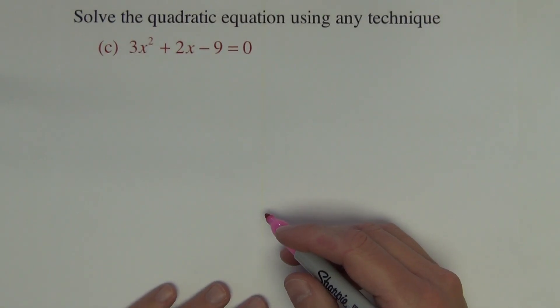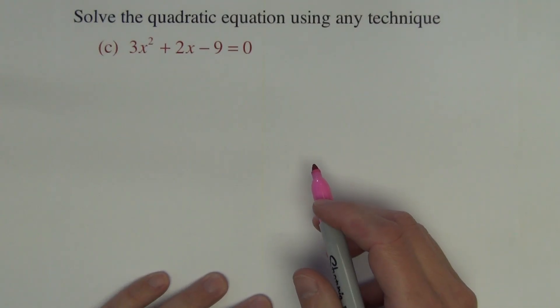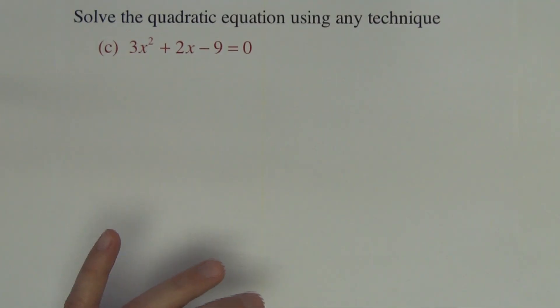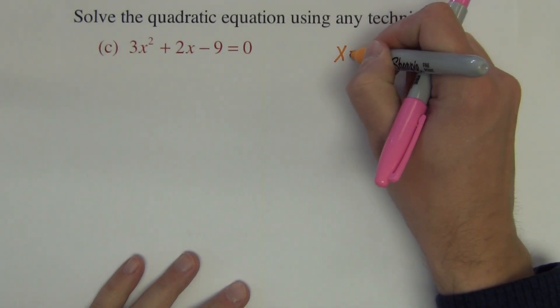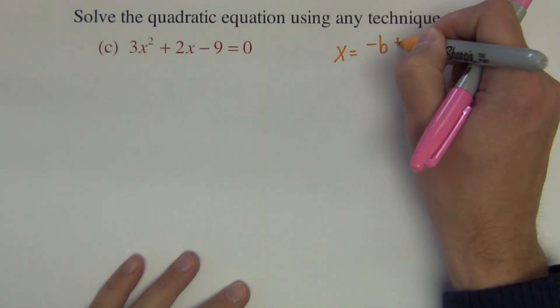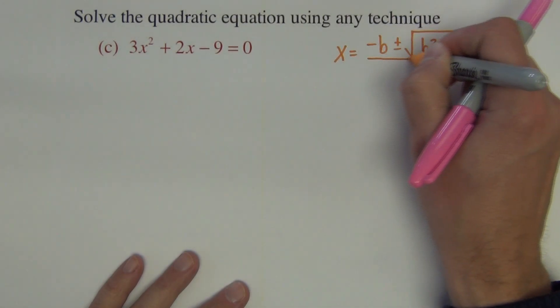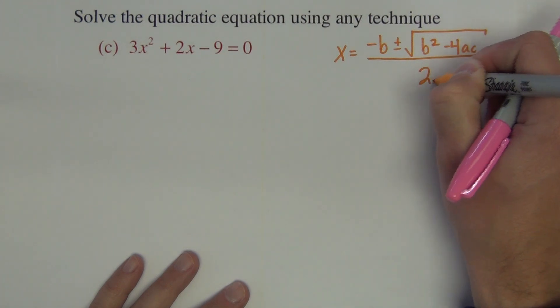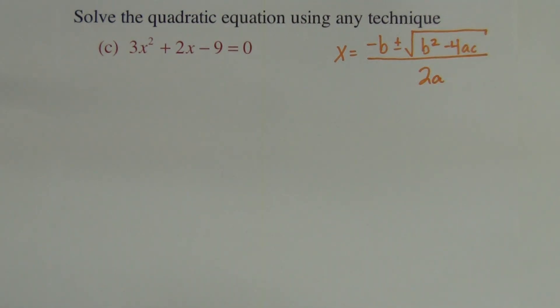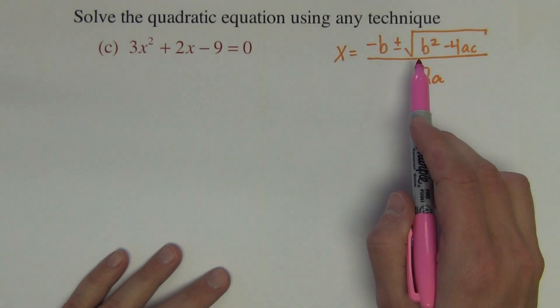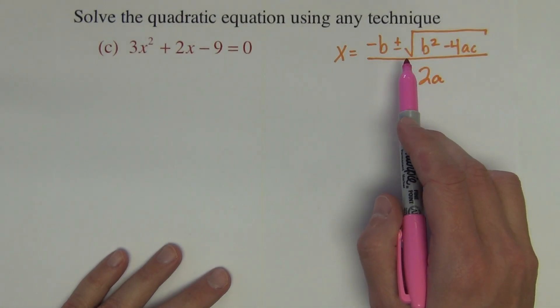Okay, this last one is already set equal to zero. I've thought about it already and I don't think that I can factor this one. If I can't factor it, one way to do it is to use the quadratic formula. So here's the quadratic formula. x equals negative b plus minus square root b² minus 4ac all over 2a. If you do not know that quadratic formula and want to use it on the final, you need to put it on your note card to use.